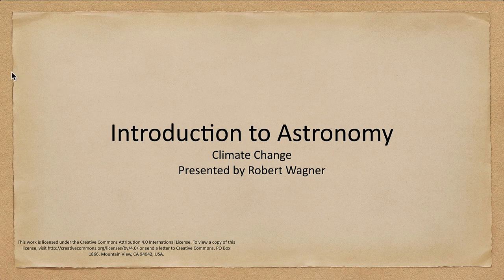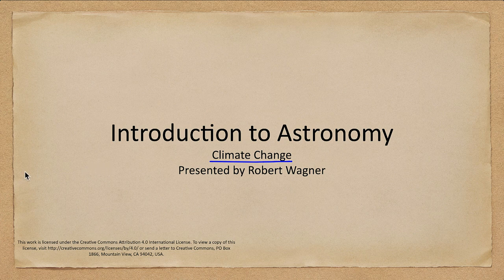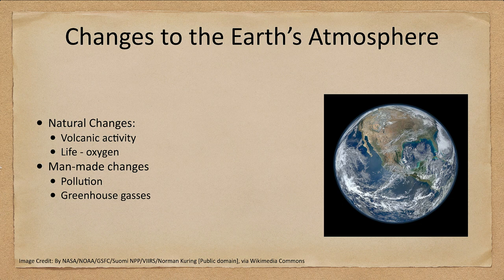Welcome to the introduction to astronomy. In this lecture we are going to talk about climate change and look at how Earth has changed over the billions of years it has been around. We talked previously about the atmosphere — let's look at some of those changes. There are two types of changes to Earth's atmosphere: natural changes and man-made changes.